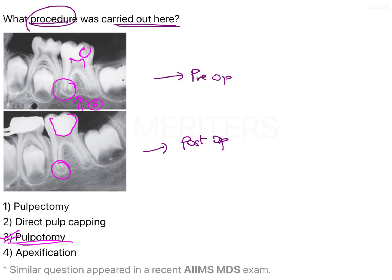Pulpotomy is a pulp therapy usually done when the infection or carious lesion is restricted to the coronal pulp. The radicular pulp is vital and healthy, and it is retained to allow root development to take place — especially in a young immature tooth where root apical closure has not yet been achieved. We maintain the healthy radicular pulp and only remove the coronal pulp which is infected, then fill it so that root closure can continue. This is the technique of pulpotomy.